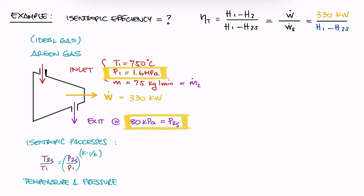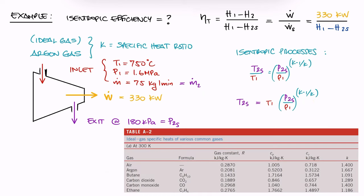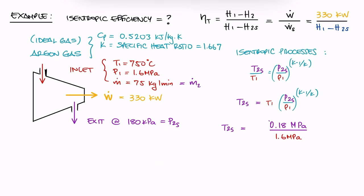We have both of the pressures and temperature 1, and all we're missing to solve for T2S is the specific heat ratio of argon. We look that up to find 1.667, and while we're here, we can also write down the specific heat Cp, which we will use in just a minute. We substitute the values, making sure that we use temperatures in Kelvin, and we find the exit temperature of argon for the theoretical isentropic process.